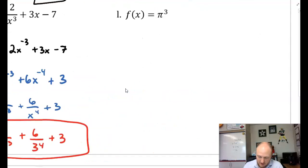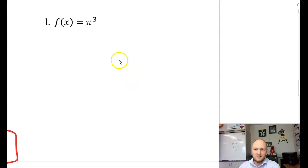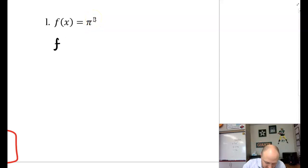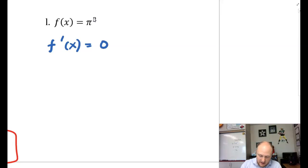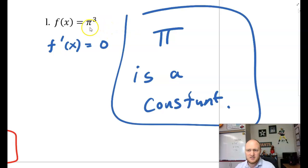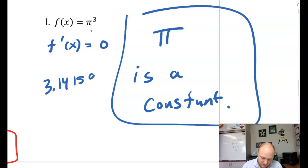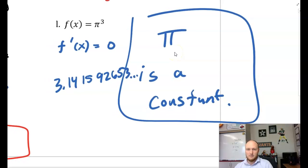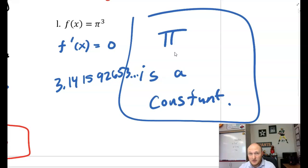Last one, part L: f of x equals pi to the power of 3. f prime of x is just zero. The main takeaway: pi is a constant. Everyone sees pi and thinks it's a variable — it's not. It's just a number, approximately 3.14159. So f prime of x equals zero, and f prime of 3 is also zero.